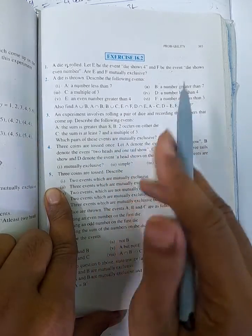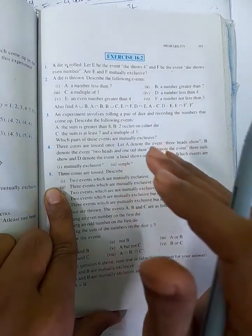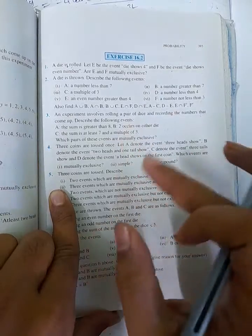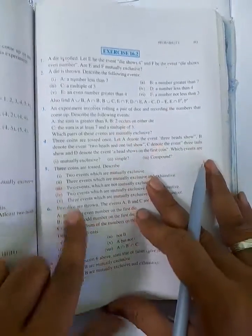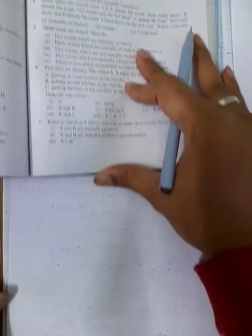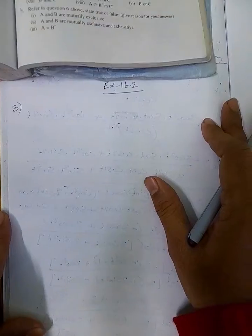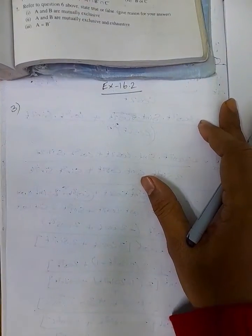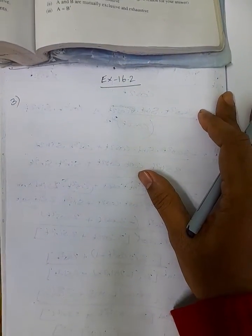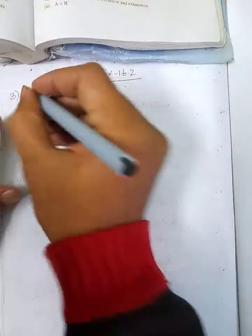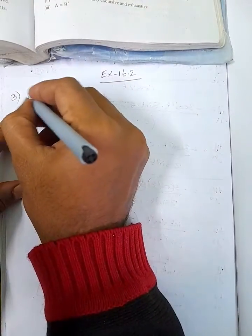The experiment involves rolling a pair of dice. So the total sample space for a pair of dice — let's solve the question. The total sample space S is equal to all ordered pairs from rolling two dice.